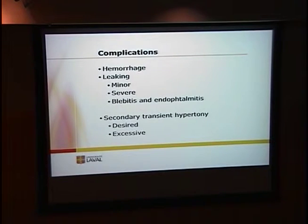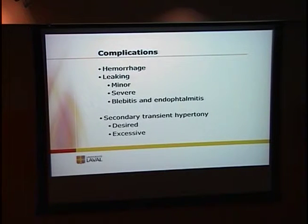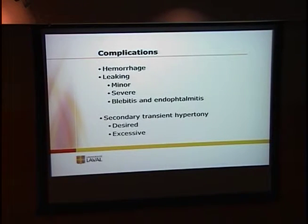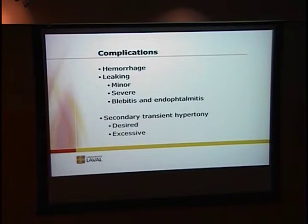We can still have complications even though the technique is described as going very well. We can have hemorrhages. We can have leaking — sometimes minor leaks that resolve spontaneously within 24–48 hours, and sometimes severe enough to require an additional stitch to close the hole. Rarely it could lead to endophthalmitis — I have not had any cases of endophthalmitis with my transconjunctival sutures. We commonly have hypertony post-op, which is often desired. Sometimes it is excessively high, and I tend to wait a few weeks before cutting the stitch, to prevent the hypotony from returning.